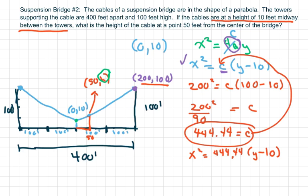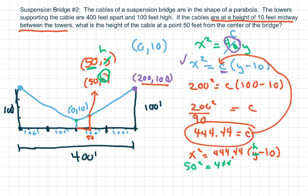Now we have to find H. Instead of Y, this point here is (50, Y) but we're calling it H, so I'm going to change Y to H in the equation. I'm going to plug in x = 50, giving me 50² equals 444.44 times H minus 444.44.